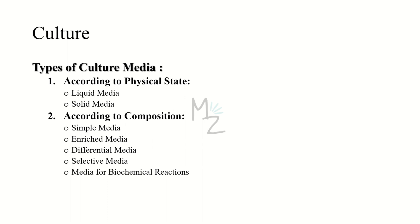Solid media are prepared by adding solidifying agents like gelatin or agar to liquid medium — for example, nutrient agar, blood agar, MacConkey agar, and chocolate agar. According to composition, media are classified as simple media, which contain only basic substances such as nitrogen, carbon, and minerals (e.g., nutrient broth, nutrient agar, peptone water), and enriched media, which have enriched material like blood, serum, or ascitic fluid added, required for the proper growth of some bacteria.